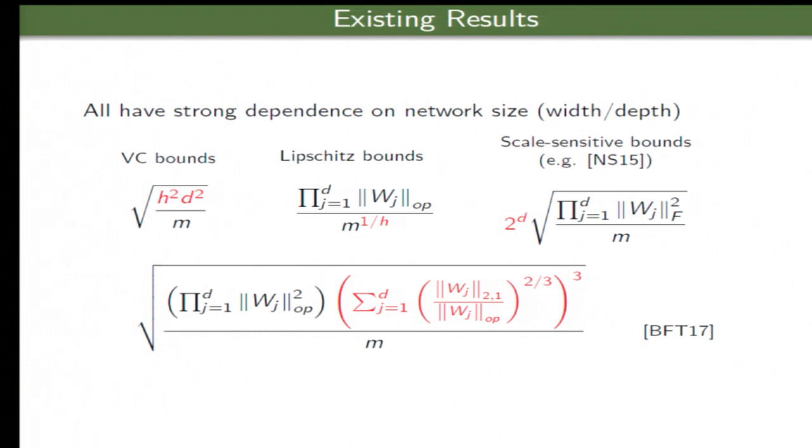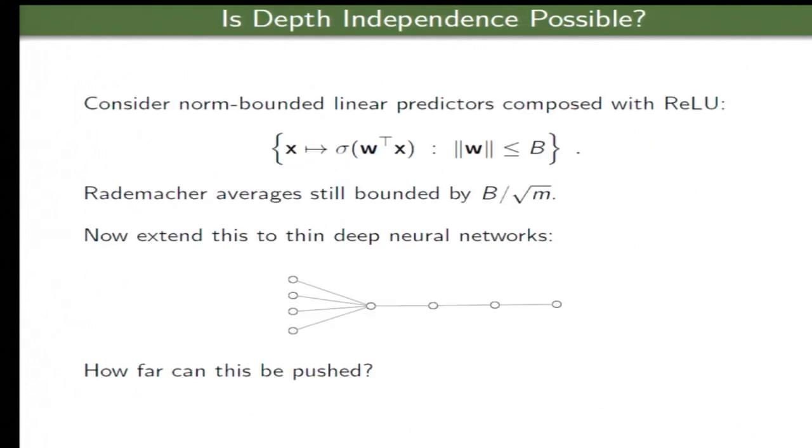And more recently, Bartlett, Foster, and Telgarsky showed the product of operator norms as the governing measure of complexity, but with an extraneous factor which is at least D cubed. D is, again, the depth of the network. So the question is whether we can remove these extraneous factors like that. So is depth independence even possible for some neural networks?